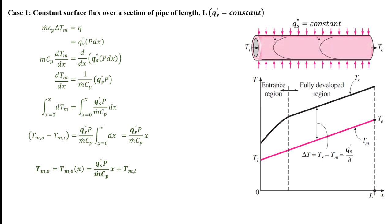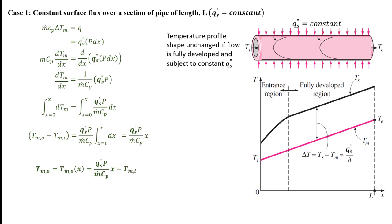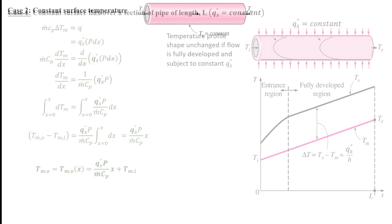The key takeaway is: if the surface heat flux is constant, the surface temperature cannot be constant. Furthermore, since dTm/dx is constant, the shape of the temperature profile does not change with respect to x. In other words, for a constant surface flux, the temperature profile shape remains the same down the length of the pipe.